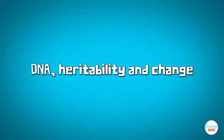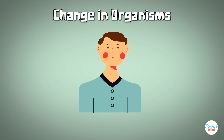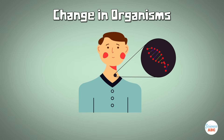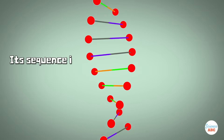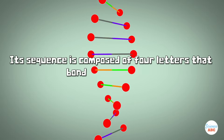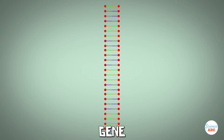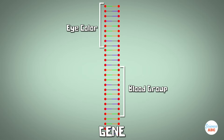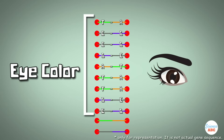DNA, heritability, and change. The core of evolution is the change in organisms, and the first place to investigate this change is the DNA. DNA is the blueprint of all life. Its sequence is composed of four letters that bond in specific ways — A to T and C to G. Small sections of the DNA sequence, called genes, code for certain traits, like eye color or blood group. Genes can come in a variety of flavors, meaning that the gene for eye color can code for blue eyes, brown eyes, or even green eyes.